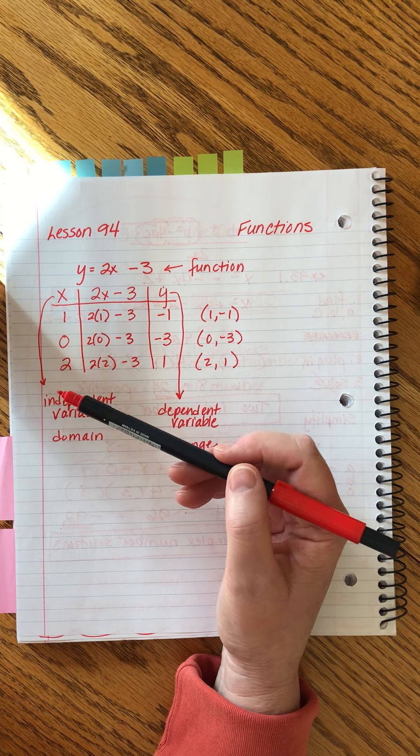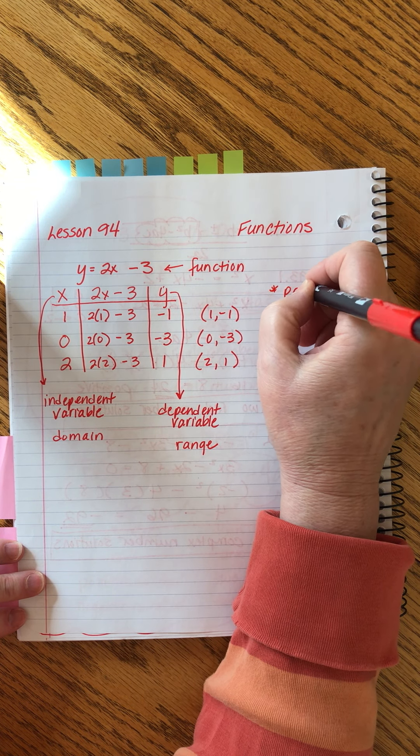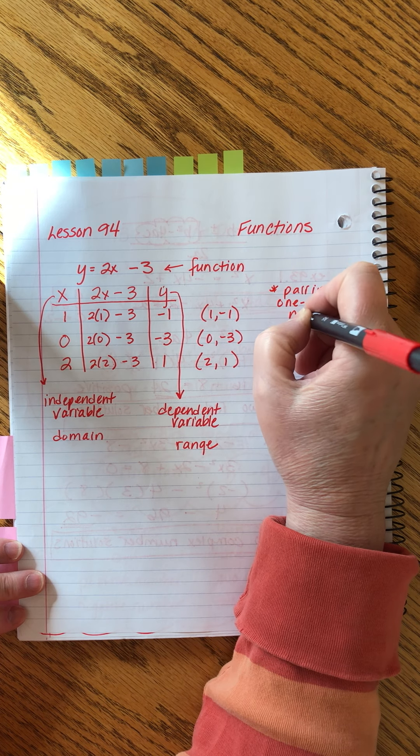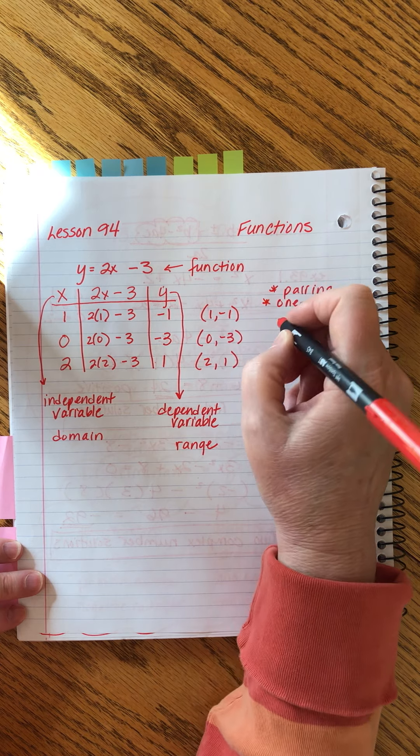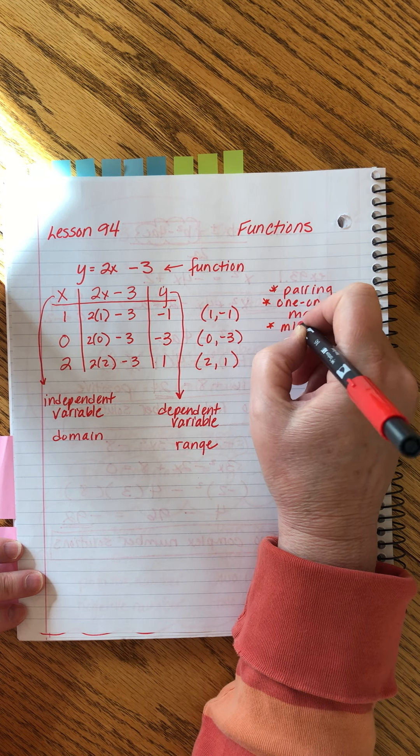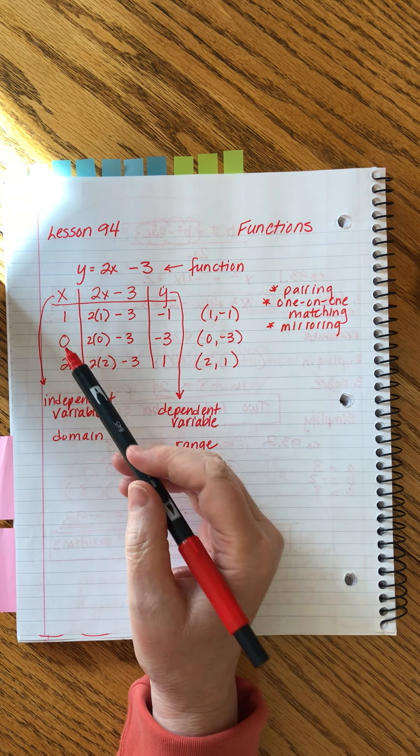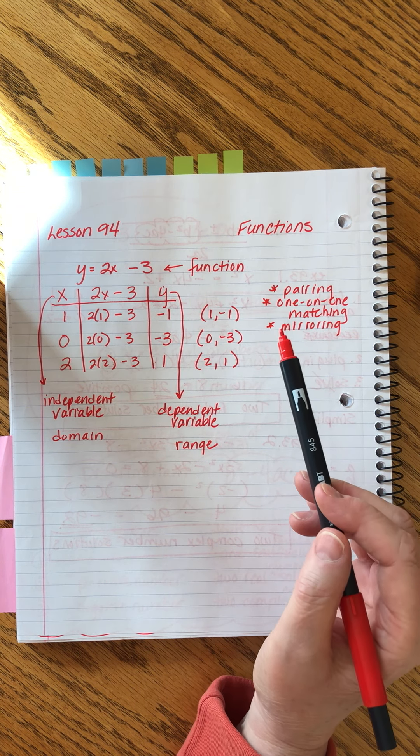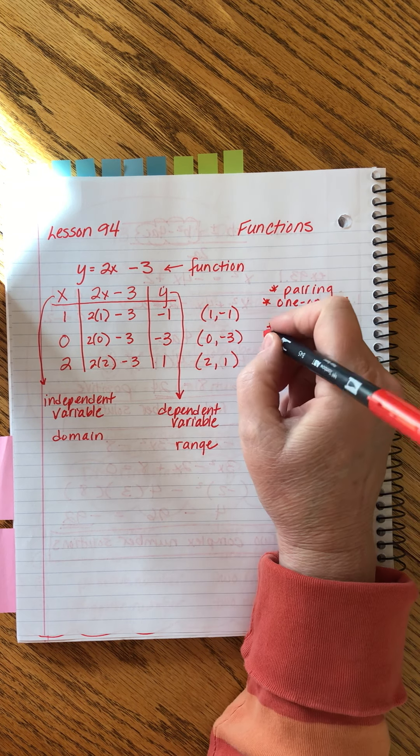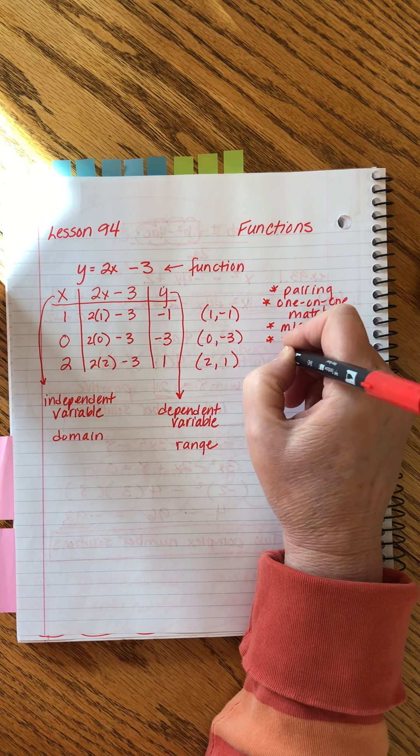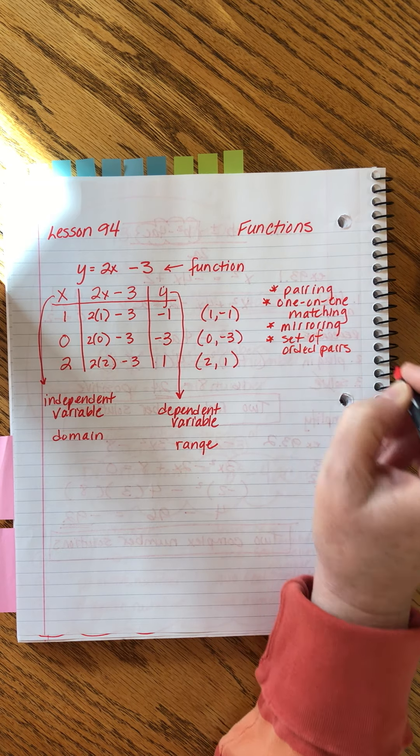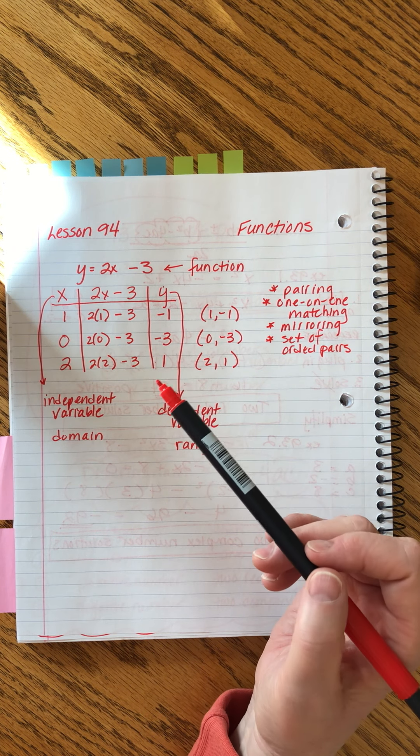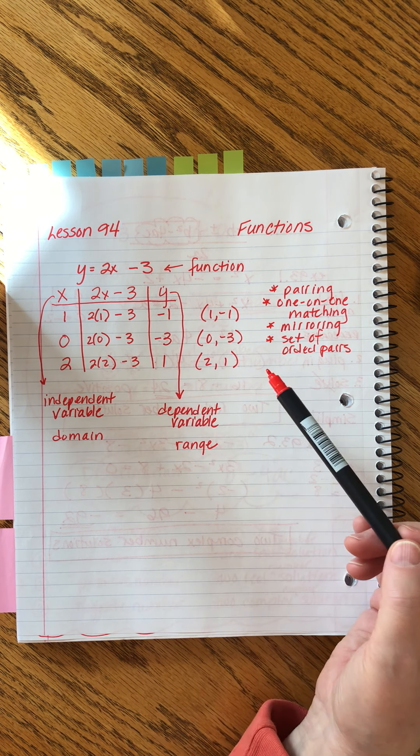That pairing is one-on-one matching, or another word that is very poetic, I think it's called mirroring, that relationship that whenever we put in this, we'll always get that. These are all words that describe that. Those are very important and unique features of a function. And we also get another word for it is a set of ordered pairs. So, we understand this intuitively. These are just some of the words that we use that describes this very specific characteristic of functions that we get this unique pairing of numbers.